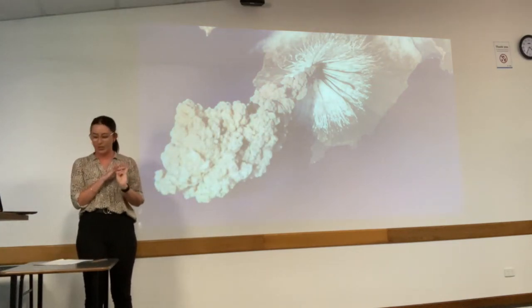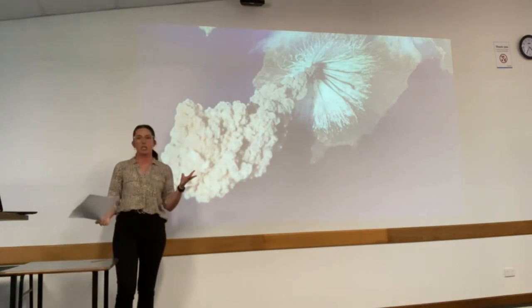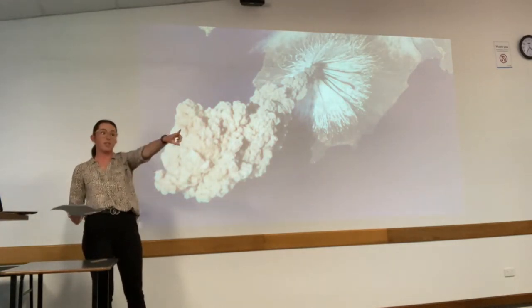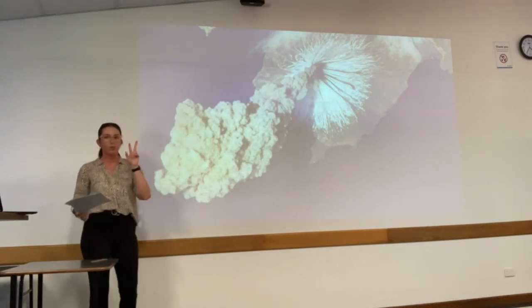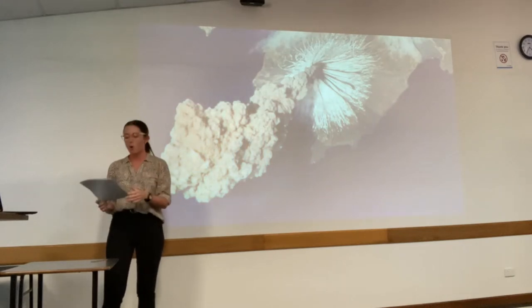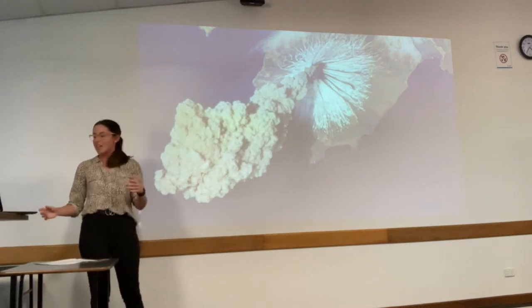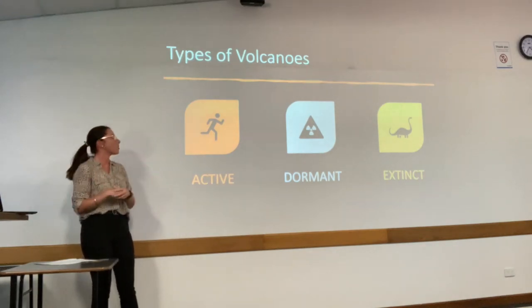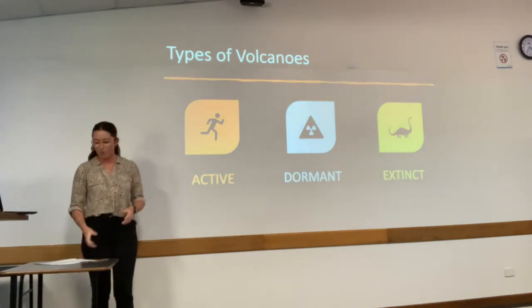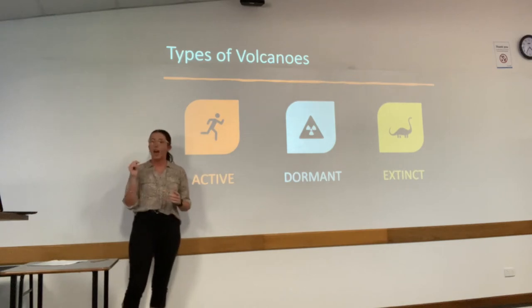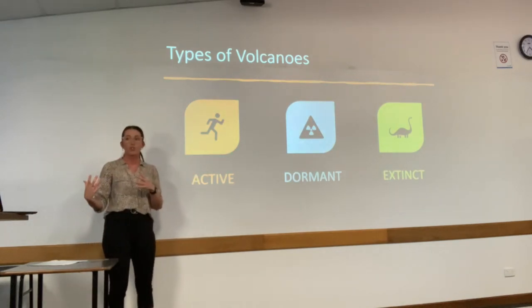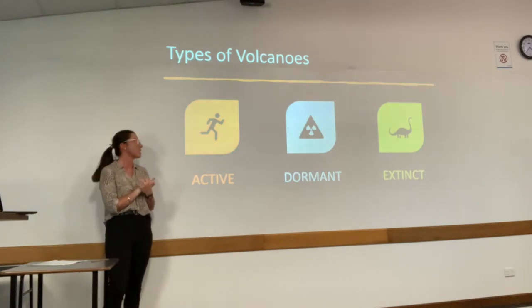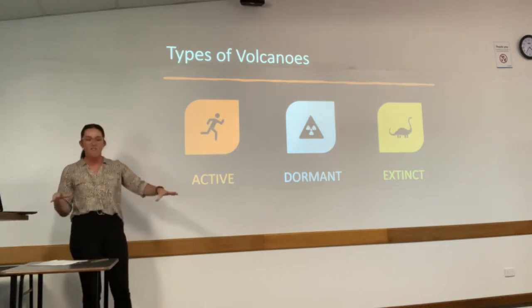There are three different types of volcanoes. Active volcanoes erupt constantly — not all the time, but they do erupt. Dormant means it might not have erupted yet, but it could in the future, or it has recently and might not for a really long time. Extinct means it hasn't erupted ever in human history.